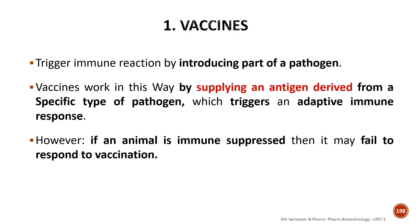The vaccine works by supplying antigen derived from a specific type of pathogen, which will adapt the over-acquired immune response. However, in some situations, some host cells are already immune suppressed, and there is reduced capacity for the immune system to respond.